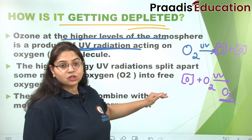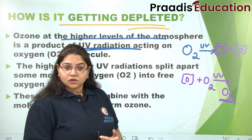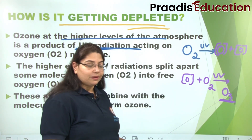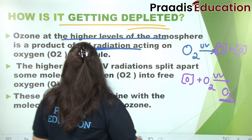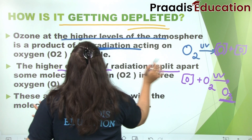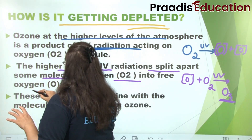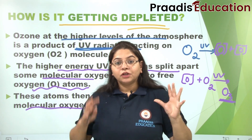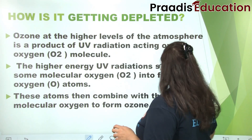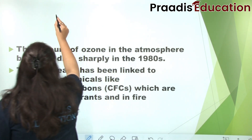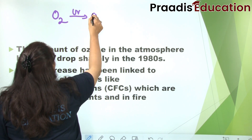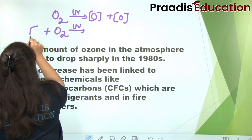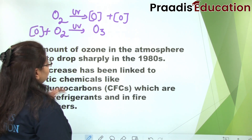So O3 is formed like this: the reaction is that the oxygen molecule splits into two atoms of oxygen — nascent oxygen — and one nascent oxygen then reacts with the molecular oxygen to form the tri-atom, which is O3. This is how ozone formation starts. Higher energy UV radiations split apart molecular O2 into free oxygen atoms, which then combine with another molecular oxygen to form ozone.